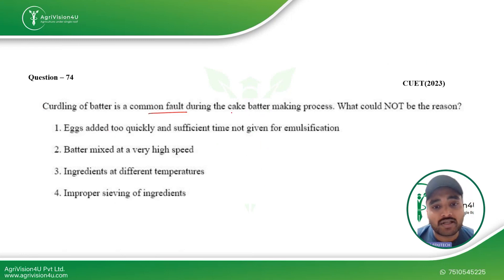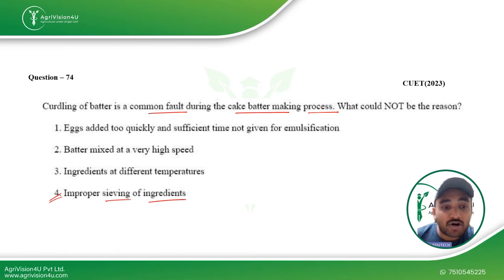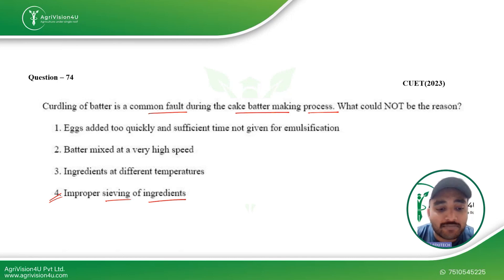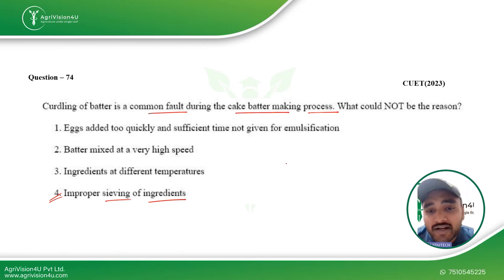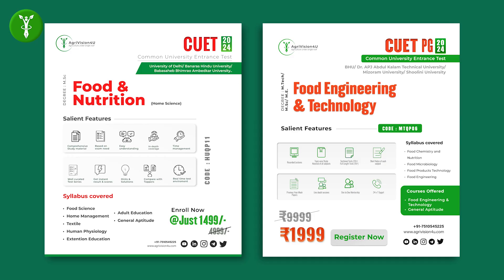The next question is about curdling of batter, which is a common fault during the cake making process. This is from bakery technology, and the answer is improper sieving of ingredients. If ingredients are not sieved properly, clusters or agglomerates of flour may remain inside the batter and cause curdling after the cake is baked.